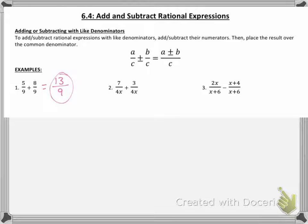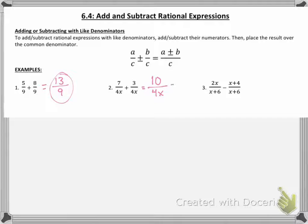The same will be held true with any denominators that have variables in them. As long as it's the exact same denominator, you can just go ahead and add or subtract. So here I have 7 over 4x plus 3 over 4x. My common denominator is 4x — that's going to stay put — and my numerator, 7 plus 3, is 10. Now, one thing we're always going to do is try to reduce, no different than with regular fractions. We can divide a 2 out of each of the numerator and denominator, leaving us with a more reduced answer of 5 over 2x.